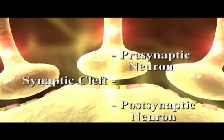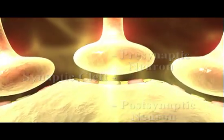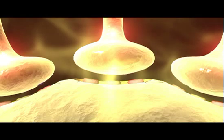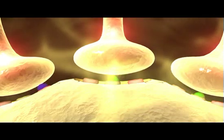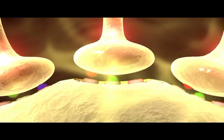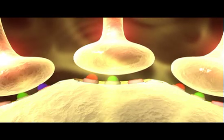The arrival of an action potential at the synaptic terminal causes the synaptic terminal to become positively charged and release neurotransmitters into the synaptic cleft. The neurotransmitters diffuse rapidly across the synaptic cleft and bind to receptors in the membrane of the dendrites or cell body of the postsynaptic cell.